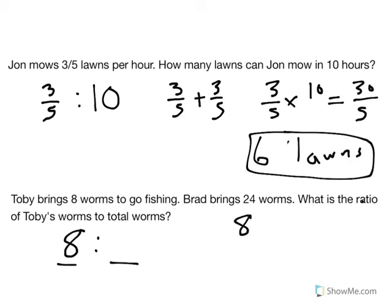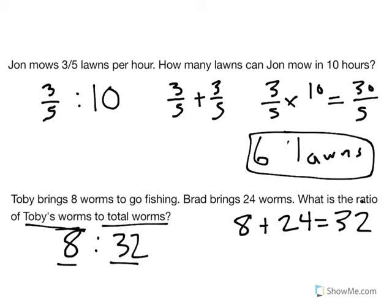Well, if Toby brought eight and Brad brought twenty-four, that would mean there's a total of thirty-two worms. So our ratio of Toby's worms to total worms would be eight to thirty-two.